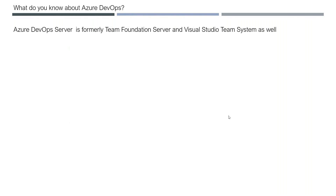Before we get into Azure DevOps actual work, let's understand some basic concepts. There is a history for Azure DevOps — it is a product suite, meaning a group of applications available in the same product. It started with VSS (Visual Source Safe) more than 15 years ago, then was renamed to TFS (Team Foundation Server), then to VSTS (Visual Studio Team Services), and currently it is called Azure DevOps.